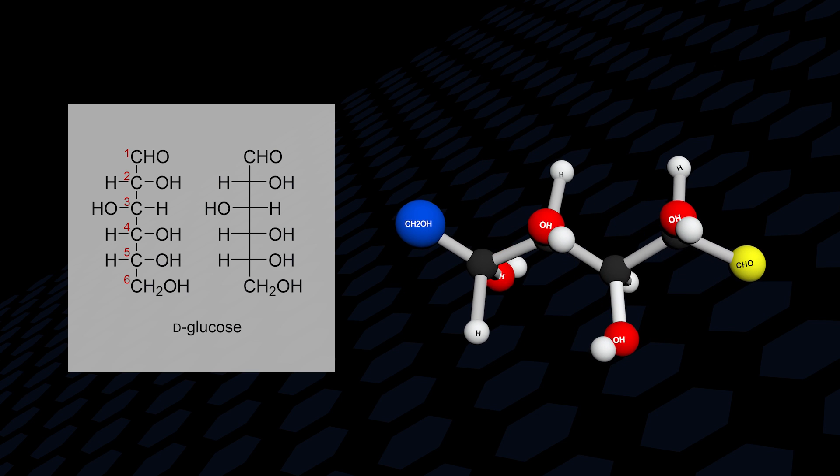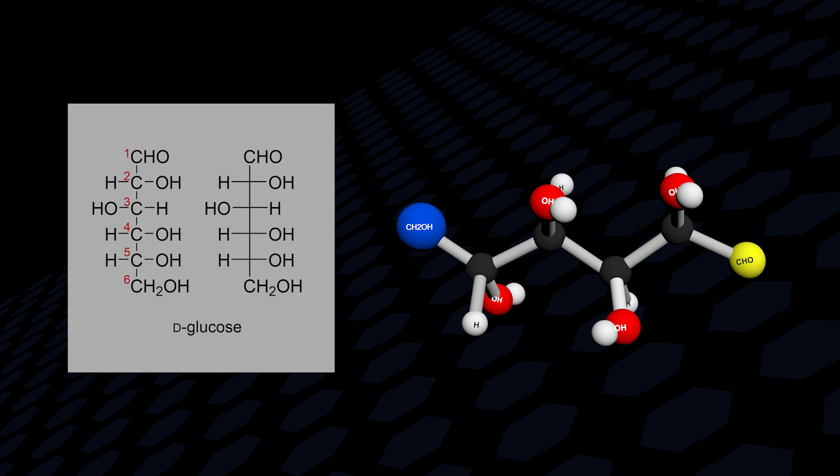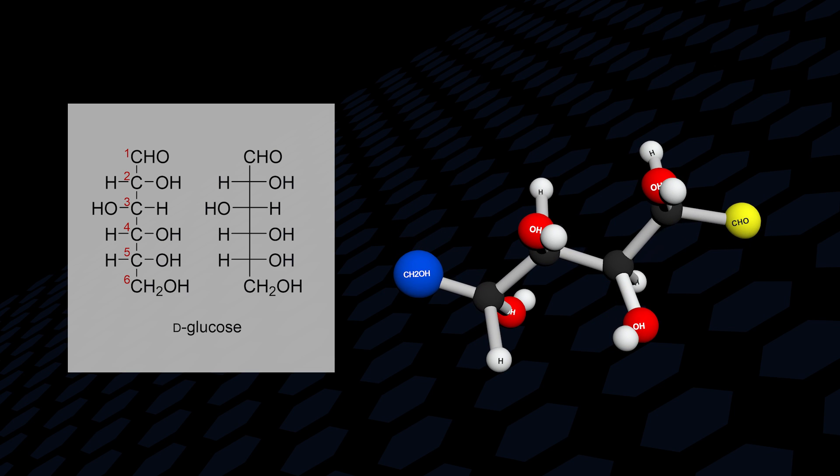The Fischer projection doesn't depict the actual three-dimensional structure of the molecule because it is not possible to flatten a bonded set of tetrahedral atoms.